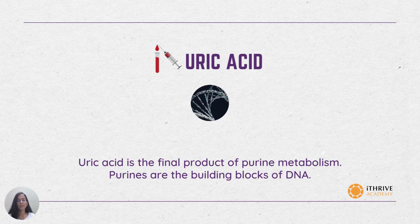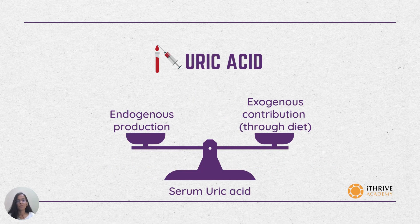The second marker is uric acid. Uric acid is the final product of purine metabolism. Purines are basically the building blocks of DNA. Uric acid is also recognized as a major antioxidant. Serum uric acid balance is determined by its endogenous production, that is the production of uric acid inside the human body, and exogenous contribution, which is uric acid taken through the diet.